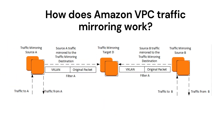Next question is: how does Amazon VPC traffic mirroring work? Traffic mirroring copies inbound and outbound traffic from the network interfaces that are attached to your Amazon EC2 instances. You can send the mirror traffic to the network interface of another EC2 instance or a Network Load Balancer that has a UDP listener. The traffic mirror source and the traffic mirror target can be in the same VPC, or they can be in different VPCs connected through intra-region VPC peering or a transit gateway.